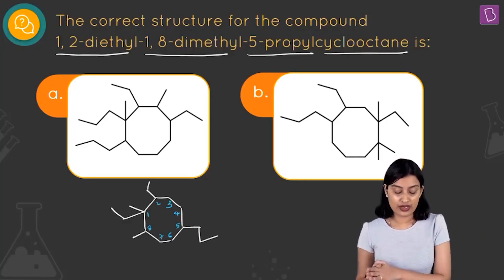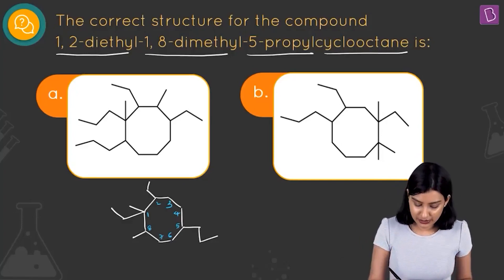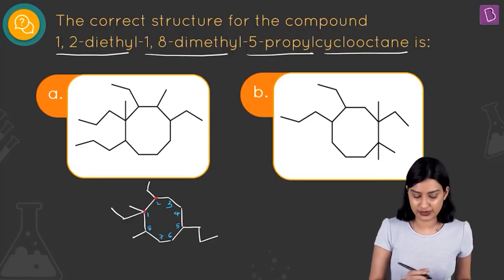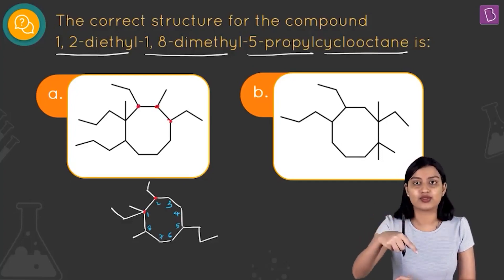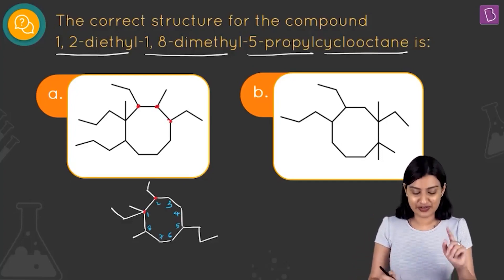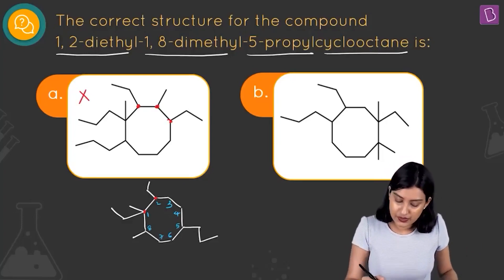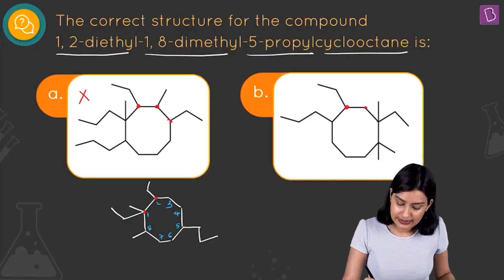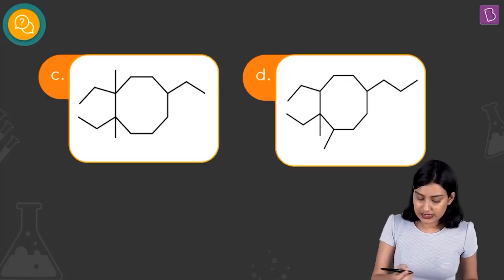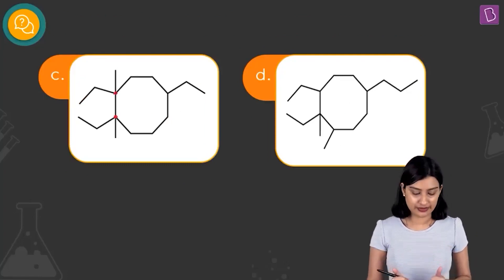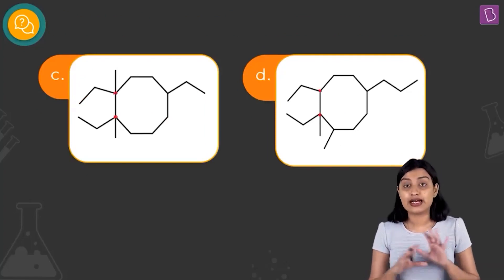Let's check our options. Since '1,2-diethyl' means ethyl must be on adjacent carbons, in option A if carbon 1 has ethyl, carbon 2 does not have ethyl — so this is not the right structure. In option B, ethyl groups have one carbon in between, so that's not right either. In option C and option D, ethyl is on carbons 1 and 2, so the ethyl substituents are fine in both C and D.